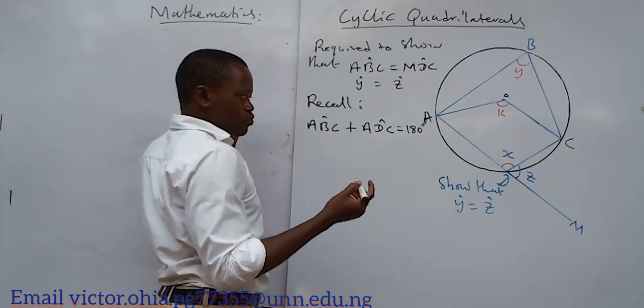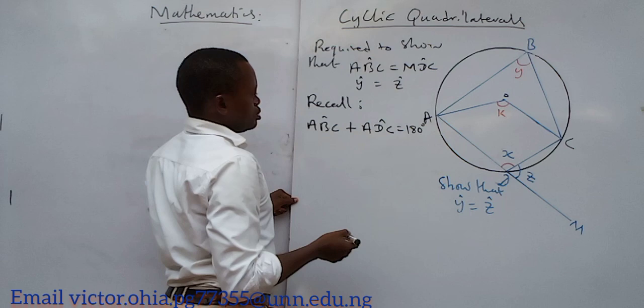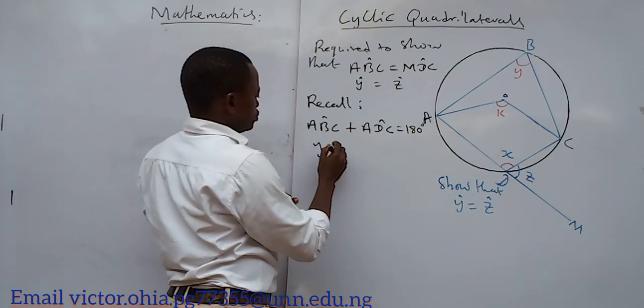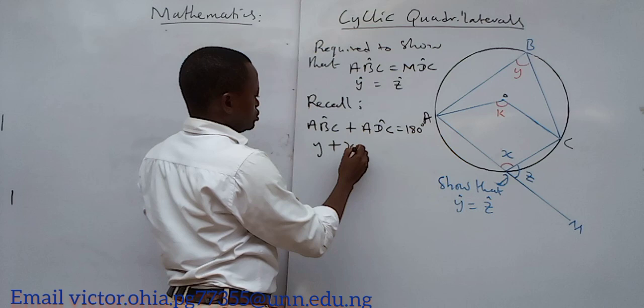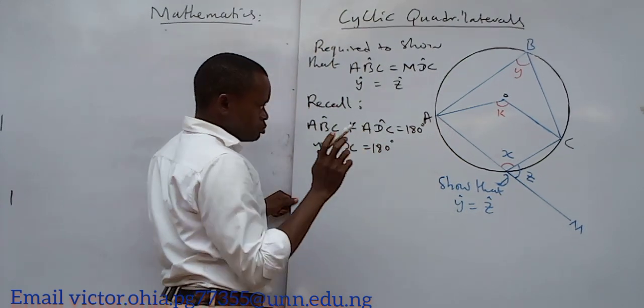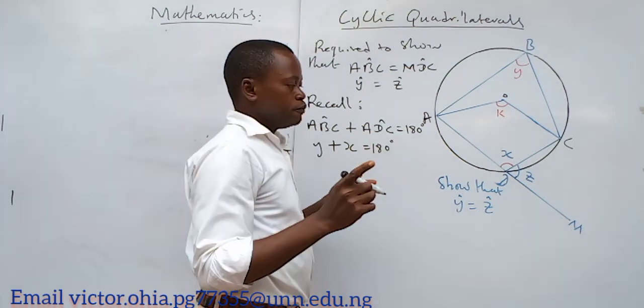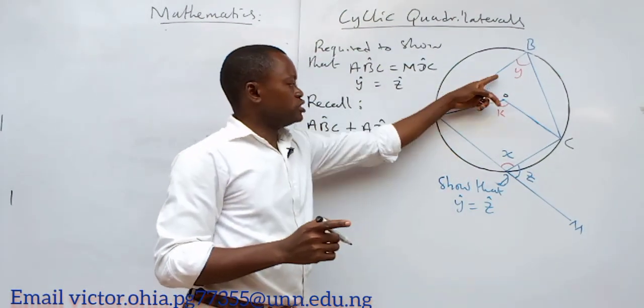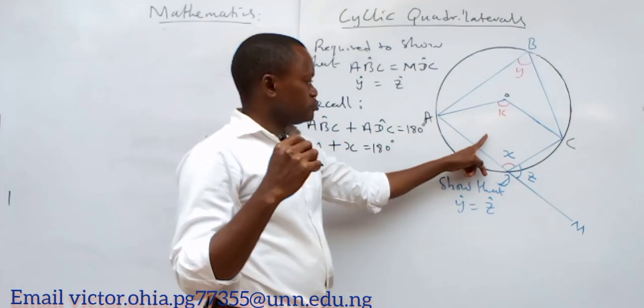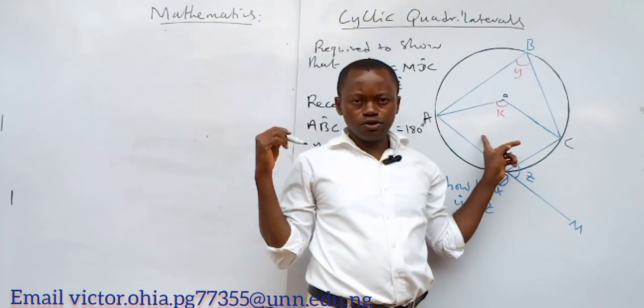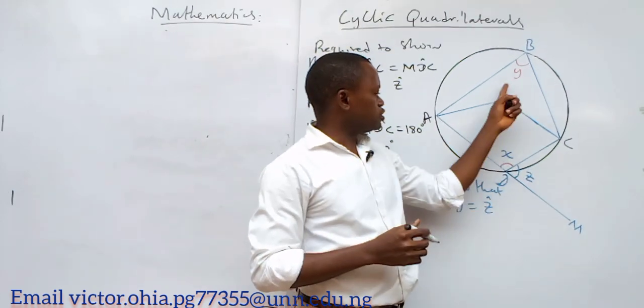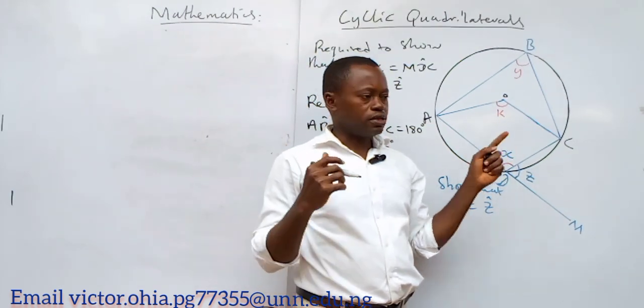That is what we are trying to say—that y plus x equals 180 degrees. Where is it coming from? It is coming from the proof that opposite angles of a cyclic quadrilateral are supplementary. We have done that proof already.